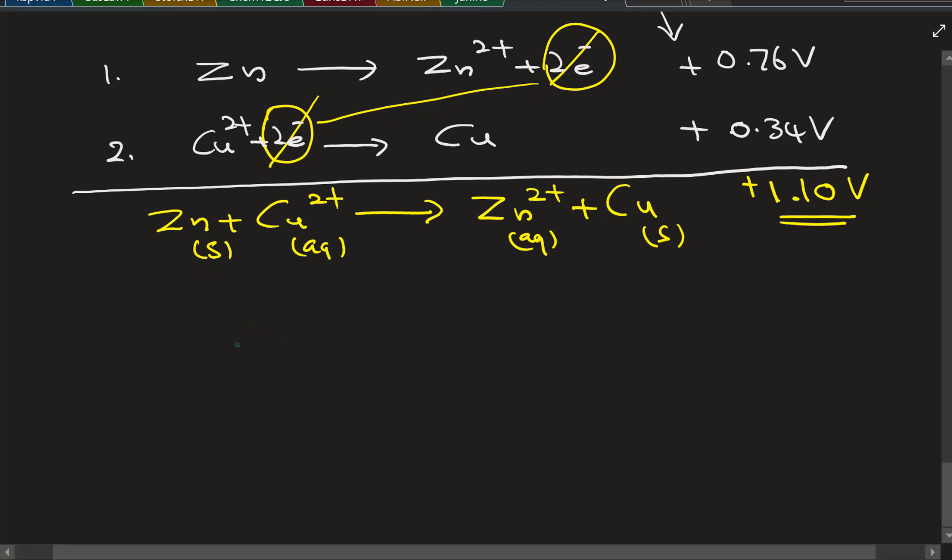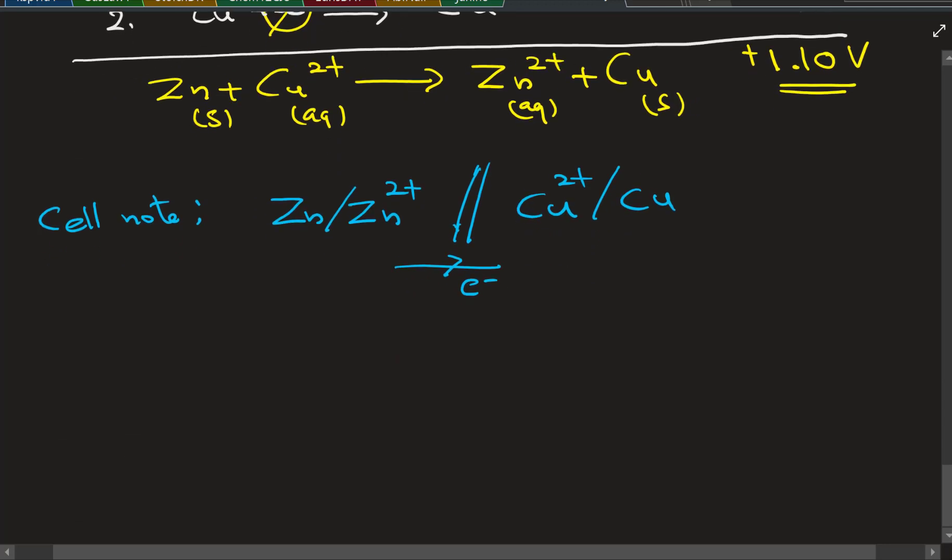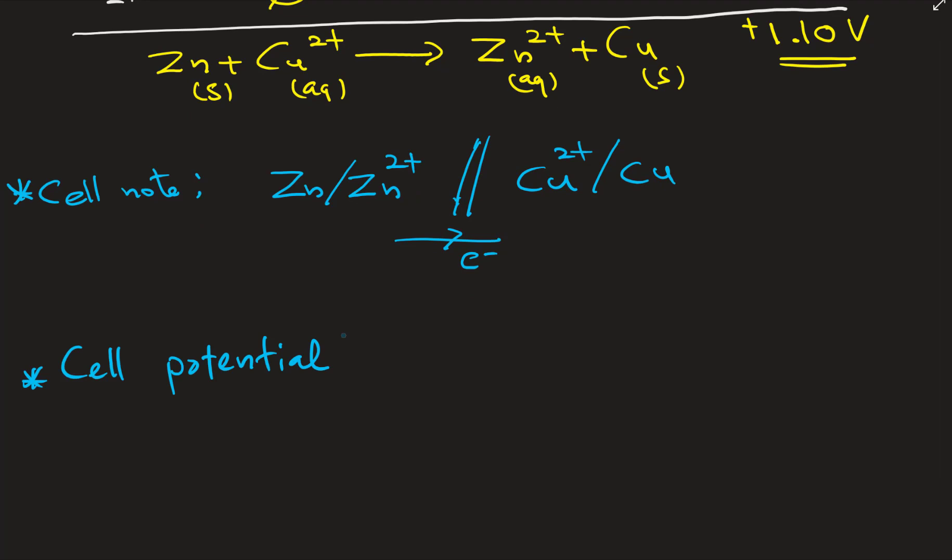Two half cells give you one electrochemical cell, and this is called the cell notation. This is the direction of electron flow actually. You see, zinc becomes zinc 2+, there's a barrier in the middle, and then copper 2+ becomes copper. That's the cell notation or cell note. We also need to know the cell potential. E-cell, I call it E red minus E ox.